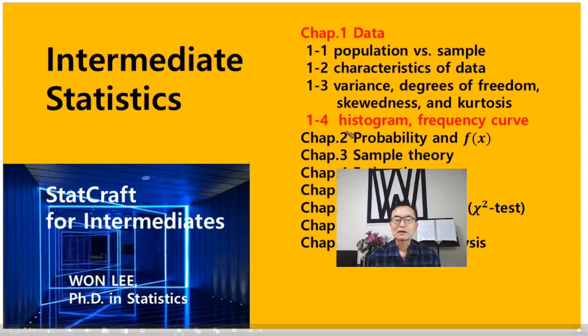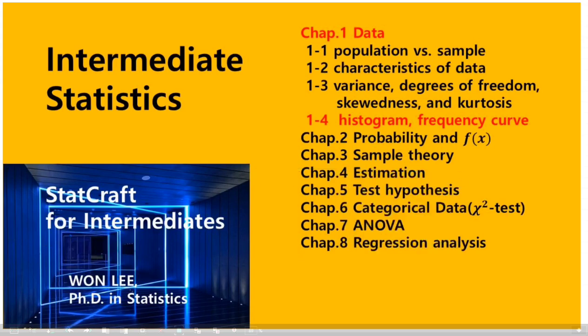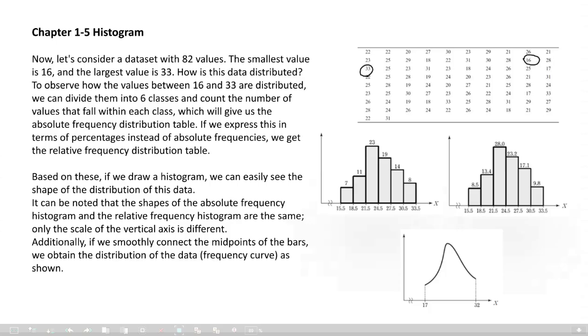Now today I am going to explain about the histogram and frequency curve. Let's go. We already see this value. They are 82 numbers. The smallest is 16 and the largest, biggest value is 33. Then, how is this data distributed? What is the shape of distribution?